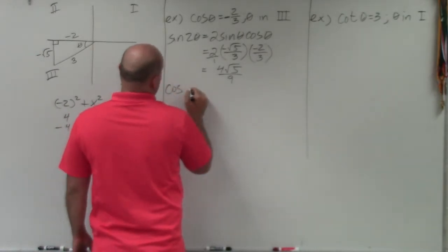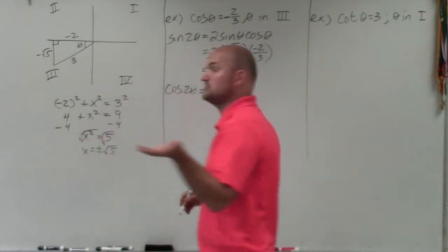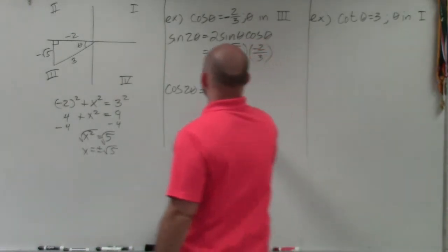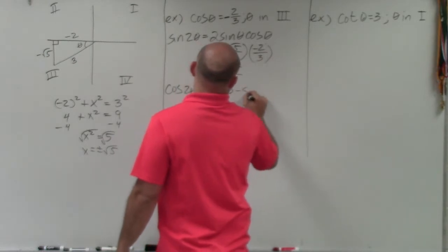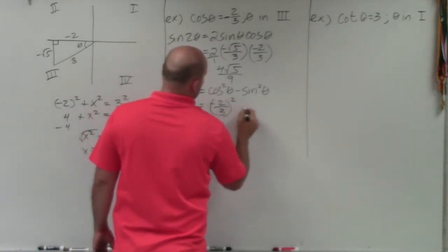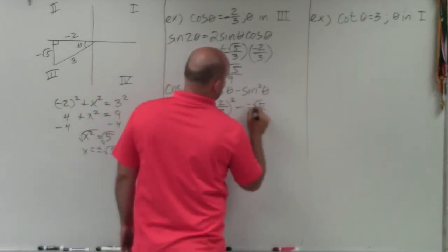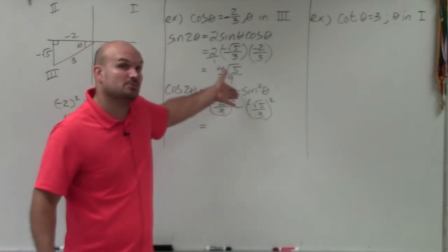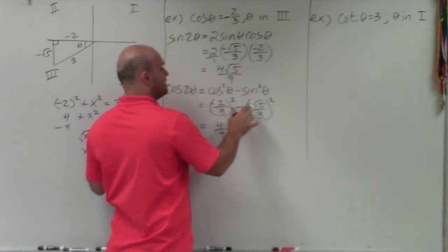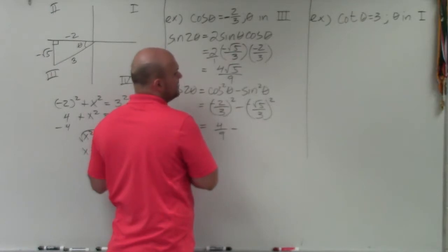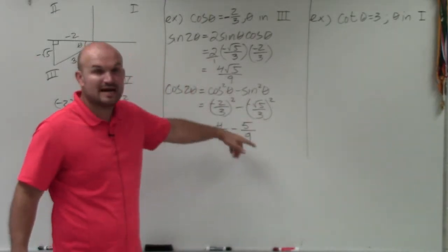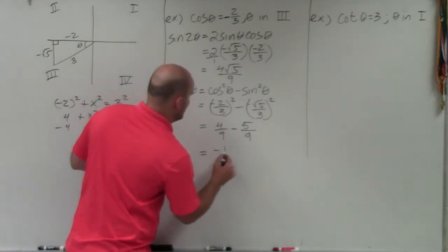Now let's do cosine of 2 theta. Remember there are three formulas to choose from; I like to use cosine squared theta minus sine squared theta. Cosine is negative 2 over 3, so it's (negative 2 over 3) squared minus (negative square root of 5 over 3) squared. Squaring both numerator and denominator: that gives positive 4 over 9 minus 5 over 9. Since they have the same denominators, subtract the numerators to get negative 1 over 9.